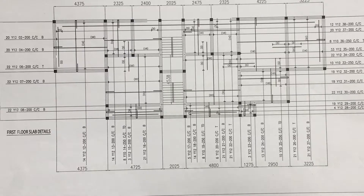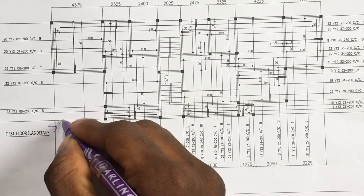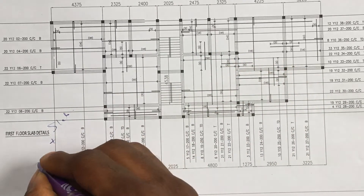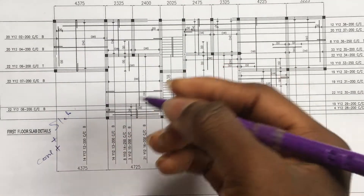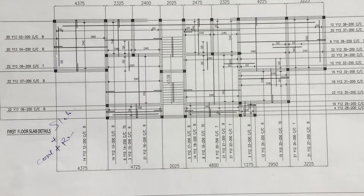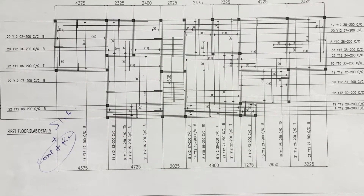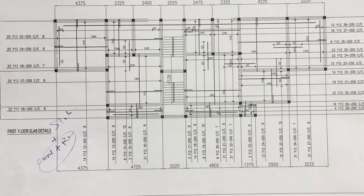A floor slab is just a normal slab where you have your concrete plus the reinforcement. It's either a single reinforced concrete or a double reinforced concrete. The first thing you need to understand is whether a slab is either two-way or one-way. After that, you move on to understanding if you have a discontinuous or continuous slab.